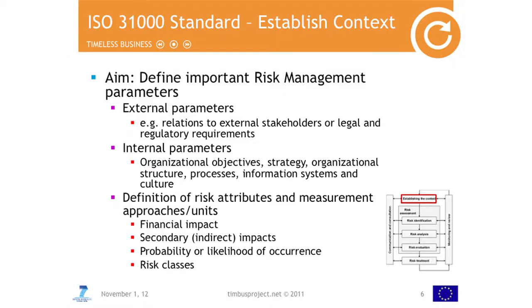The first step in risk management according to ISO 31000 is defining the context, which means looking into parameters relevant for the particular organization. So external parameters, where we look into external stakeholders, legal or compliance regulations that affect the organization. Then internal parameters, where we look into organizational objectives, organizational structure, different processes running within the organization, information systems, and the culture of the organization. Then we do definition of risk attributes and measurement approaches — talking about financial impact of the risks, and then secondary impacts, where some risks don't have a direct impact but might have indirect secondary impacts.